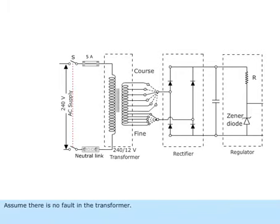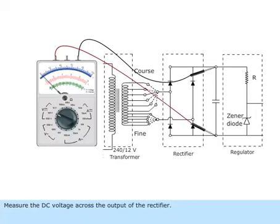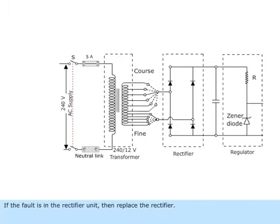Assume there is no fault in the transformer. Measure the DC voltage across the output of the rectifier. If the fault is in the rectifier unit, then replace the rectifier.